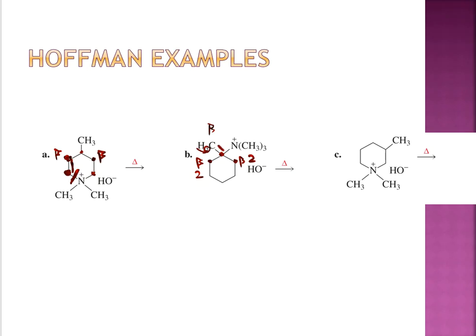What this molecule would prefer to do in the Hoffman is rip one of the top carbon's hydrogens off. A double bond would form there, and then this nitrogen piece goes away. In the product, the top carbon is now double bonded to a CH2 where that CH3 was. The ring structure stays in place - nothing happened there. Only that beta carbon was affected. This is going to be the product for part B. The nitrogen with three methyl groups goes off and does not carry a charge anymore.